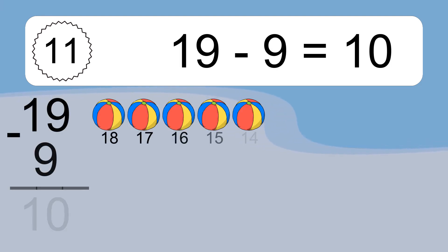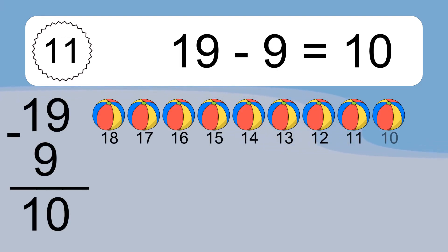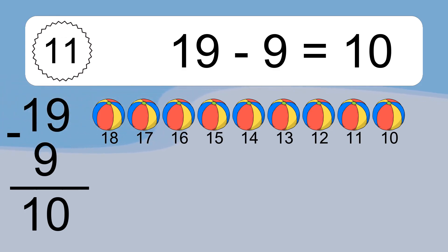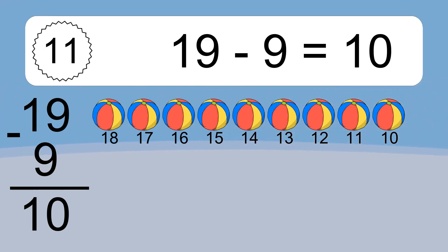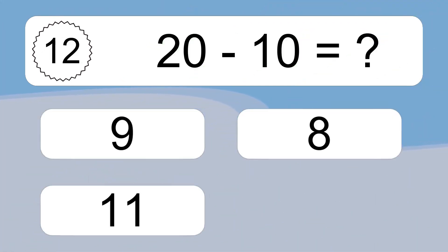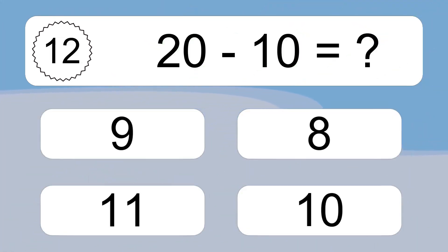19 minus 9 equals 10. Let's count it! 18, 17, 16, 15, 14, 13, 12, 11, 10. 20 minus 10 equals what?